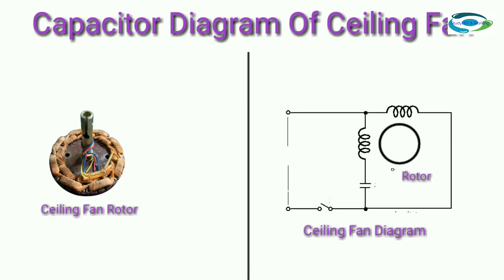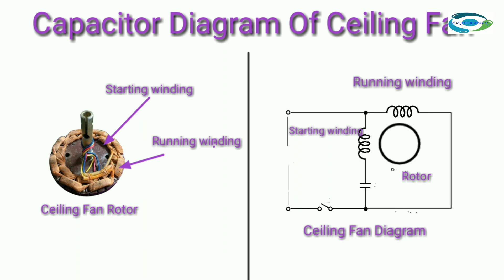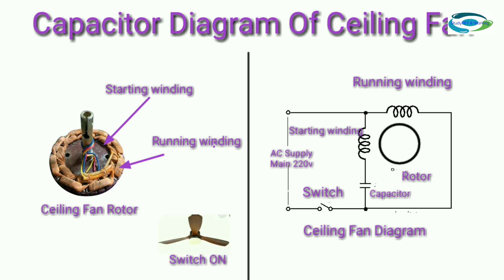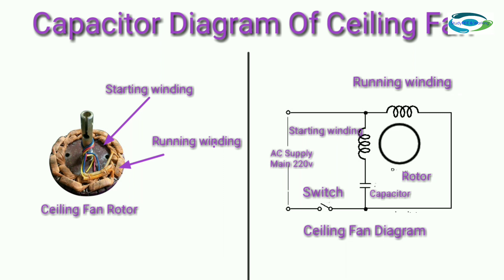Ceiling fan diagram: ceiling fan rotor, starting winding, running winding, capacitor, switch, AC supply 220V, switch on and switch off.